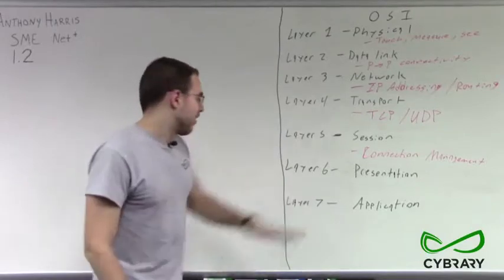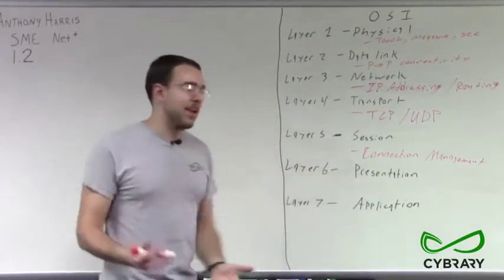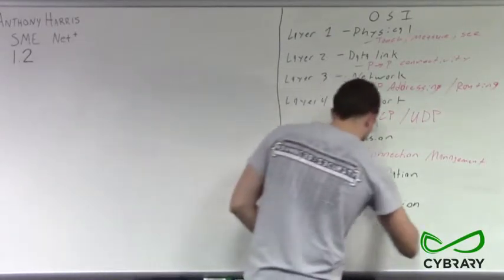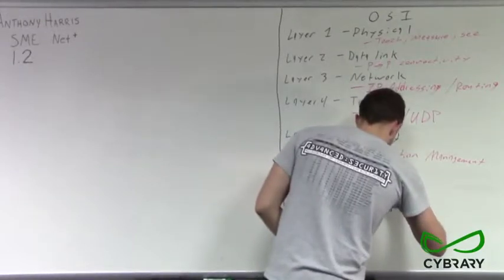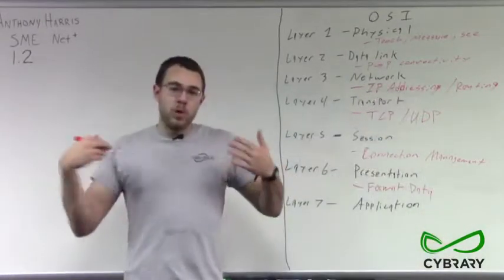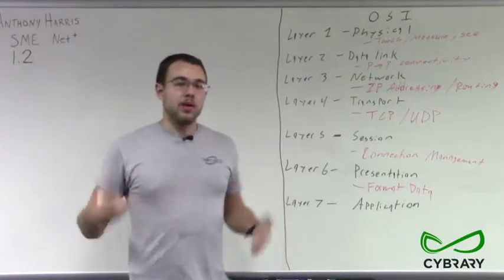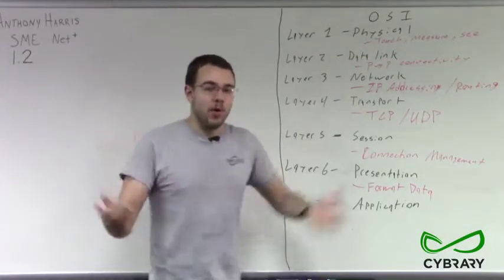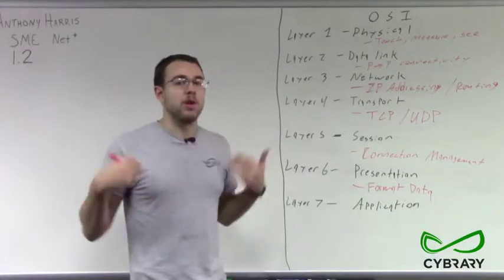Next, we have our layer six, our presentation layer. Now our presentation layer is going to be formatting data. So we're formatting data so that when we're sending it, we're creating it in a format so that it can be sent over our network, possibly a standardized or an encrypted format,